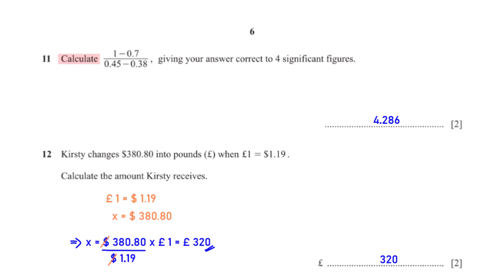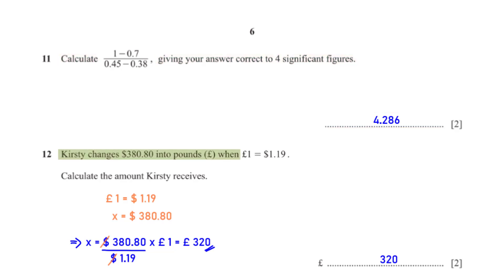Calculate (1 − 0.7) ÷ (0.45 − 0.38), giving your answer correct to 4 significant figures. When we type the given expression into the calculator, we get 4.286 rounded to 4 significant figures.